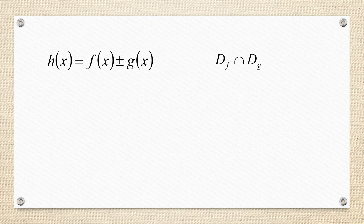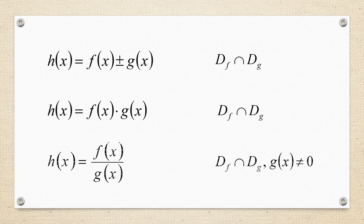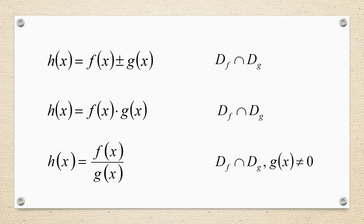Now let us discuss about the algebra of functions. If we have functions in the form of f(x) plus g(x), f(x) minus g(x), or f(x) into g(x), and f(x) by g(x), for all these conditions the domain will be the intersection of the domains of the two functions, that is domain of f and domain of g. But for the function of the form f(x) by g(x), we have the add-on condition that g(x) is not equal to 0, since it is in the denominator.